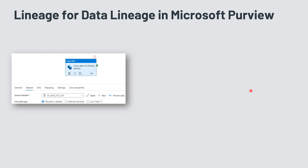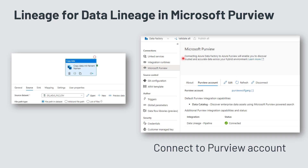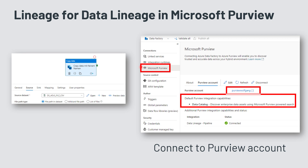What do you need in order to get data lineage from Data Factory into Purview? You need a copy activity inside a pipeline. A copy activity copies your data from A to B. In our example it's copying data from one data lake storage folder into another. You need to connect your Purview account — starting within Data Factory, you connect to a Purview account, in my example the Purview-Wolfgang catalog.